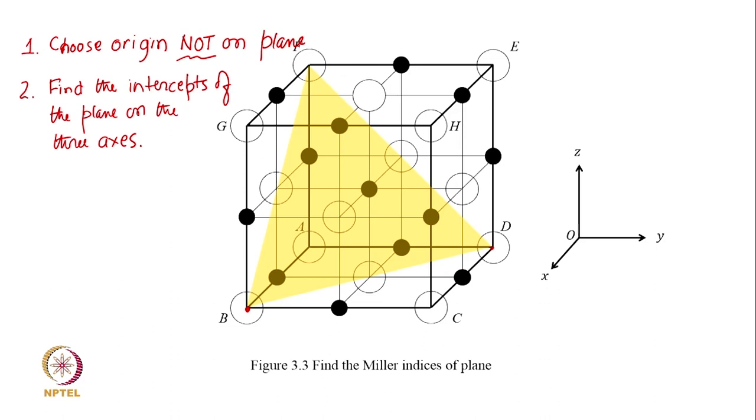Every plane passing through the origin will give me 0, 0, 0, 0, whatever its orientation. Because we are interested in intercepts in defining the miller indices, we are interested in intercepts. That is why step 1 is justified that you do not choose your origin direction on the plane.